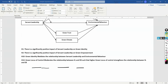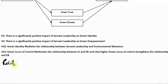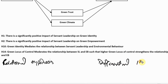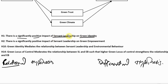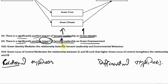There are two other terms you might come across: relational hypothesis and differential hypothesis. A relational hypothesis is where you are looking to assess the impact of one variable on the other — whether a change in one variable leads to a change in the other. For example, assessing whether higher servant leadership in an organization leads to increased green empowerment — that is a relational hypothesis.